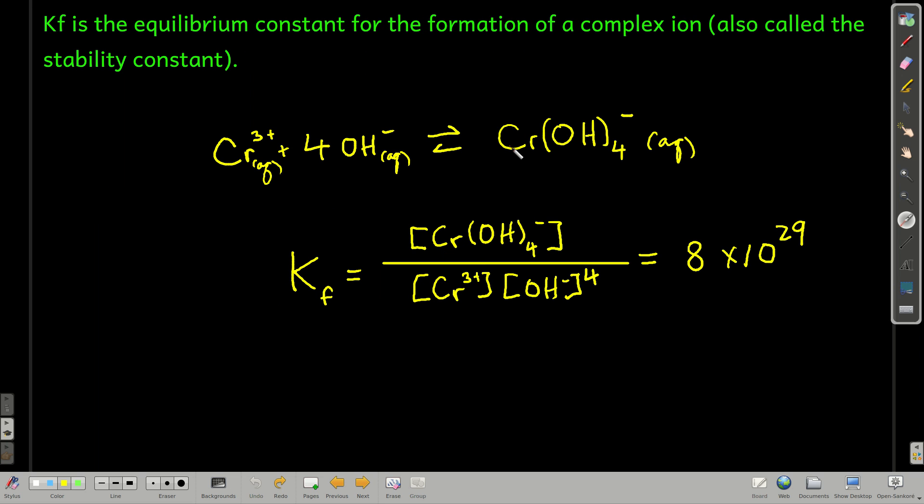First of all, we have another equilibrium constant, Kf for the formation. We call this the stability constant. For example, for the formation of this complex ion between chromium(III) and hydroxide, the Kf is the normal equilibrium expression, and it's pretty big, 8 times 10 to the 29th, which means that when we put hydroxide with chromium(III), it almost basically all reacts and forms this complex ion.